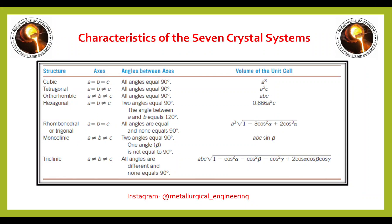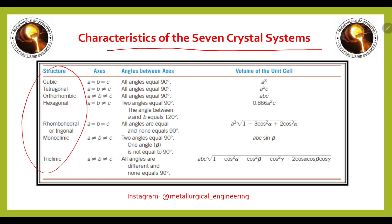Hello everyone, this is the third part for important formulas and concepts of GATE 2023. We will discuss here the characteristics of the seven crystal systems. There are only seven crystal systems available.